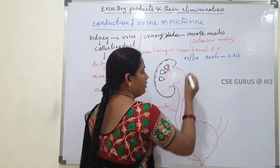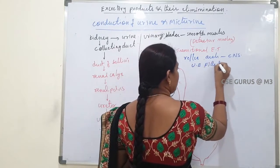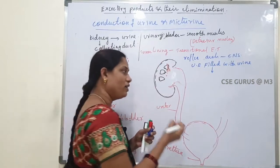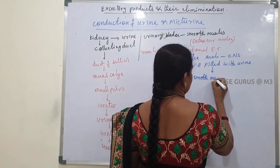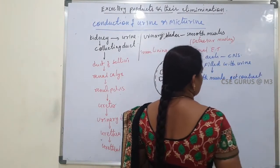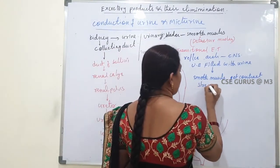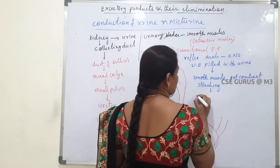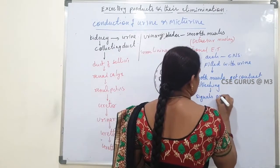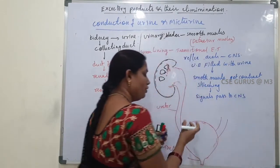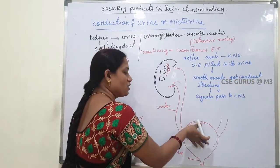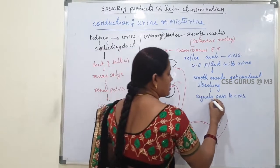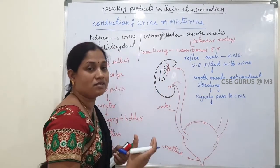Whenever the urinary bladder fills with urine, the smooth muscles get contracted and stretching takes place. Due to that stretching, signals pass to the CNS, where that information is analyzed. Again, those signals pass from the CNS to the urethra.